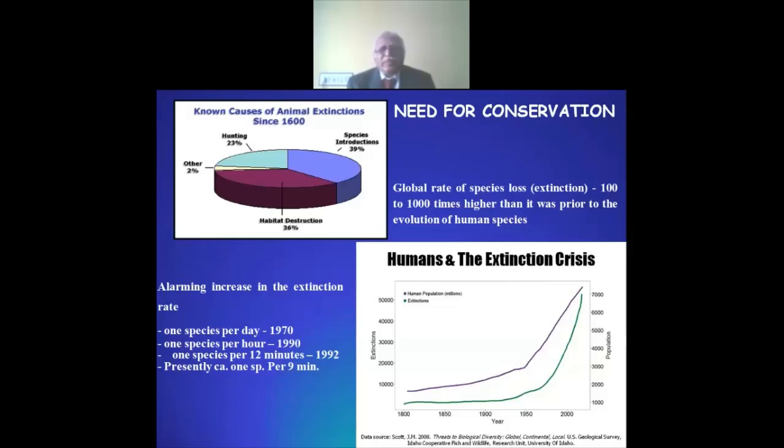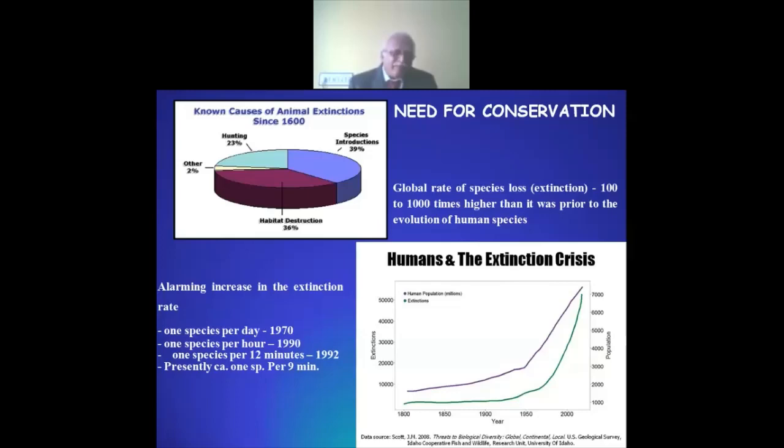Coming to conservation — the global rate of species loss or extinction is 100 to 1000 times higher than it was prior to the evolution of the human species. There is an alarming increase in extinction rate: in the 1970s, one species per day; in 1990, one species per hour; in 1992, one species every 12 minutes; and recently, one species per nine minutes. Irrational and over-exploitation of malacofauna from the mangrove is the topmost contributing factor.